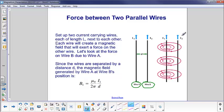At every point here where wire B is, the magnetic field strength is mu zero times the current I1 in wire A, divided by two pi and the distance between the two wires, which is d. So this distance here, that's d.